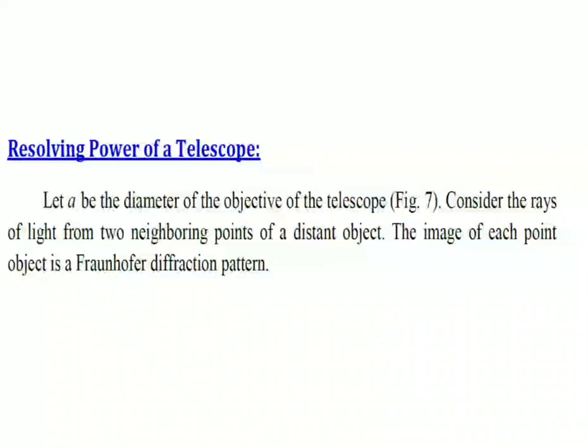Resolving Power of a Telescope is the reciprocal of the angular separation of two distinct objects subtended at the objective of the telescope, such that their images will be just resolved — as we discuss in Rayleigh's criterion for resolution. It depends upon the angle the two point objects subtend at the objective. The resolving power of the telescope can also be defined as the inverse of the smallest angle subtended at the objective by two nearby distant objects whose images are just resolved. In other words, it is the reciprocal of the limit of resolution, known as the geometrical resolving power of a telescope.